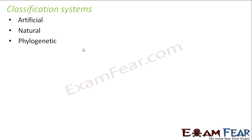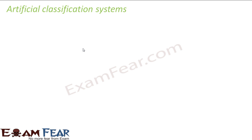The basis of classification means what are the characteristics or features based on which organisms are classified. That basis of classification is different for each of these systems. Let us try to understand each in a little more detail, starting with the artificial classification system.